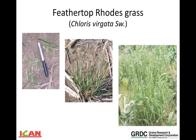For those who aren't familiar with feathertop Rhodes grass, here are some pictures of what it looks like. The key point is it's relatively easy to identify when it's in the seedling state — the stems of these young seedlings appear very flattened, which is very characteristic to this weed and different to most of our other weeds. So if we're seeing that very flattened stem, there's a fair chance it's feathertop Rhodes grass.